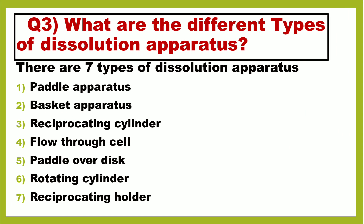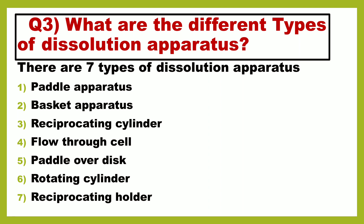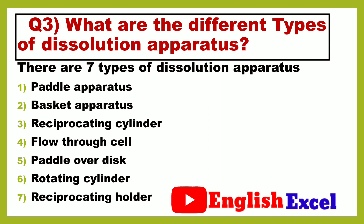Next question is: what are the different types of dissolution apparatus? There are 7 types of dissolution apparatus. Number 1: paddle apparatus. Number 2: basket apparatus. Number 3: reciprocating cylinder. Number 4: flow-through cell. Number 5: paddle over disc. Number 6: rotating cylinder. And number 7: reciprocating holder.